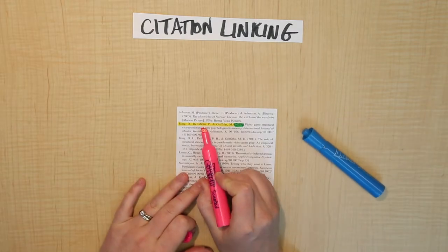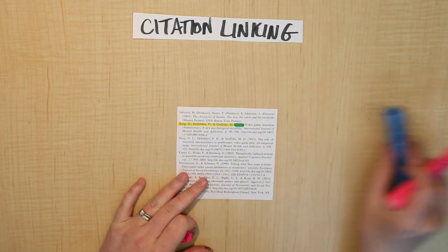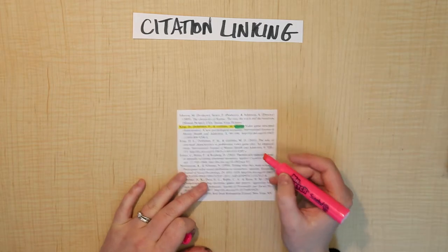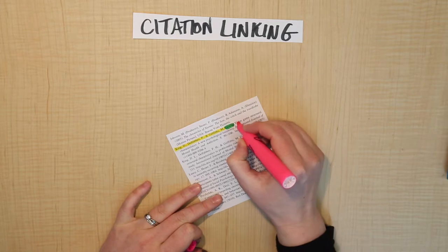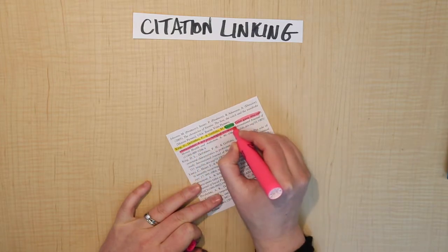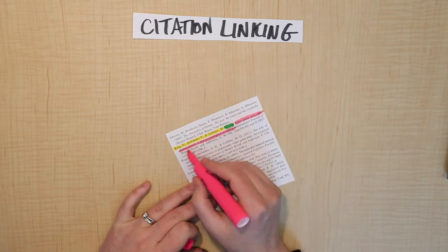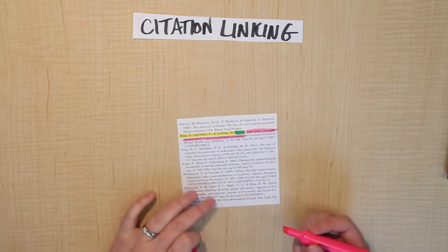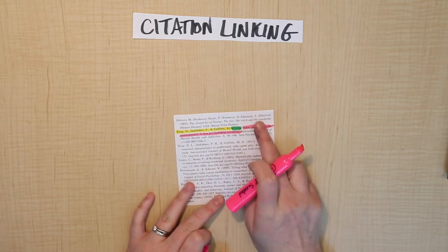Alright. So after you've got the author's names and then the year, there's going to be a section. The next piece is the article title. So this is the name of the actual study. In this case, it's called Video Game Structural Characteristics, A New Psychological Taxonomy. So that's the name of the article itself.